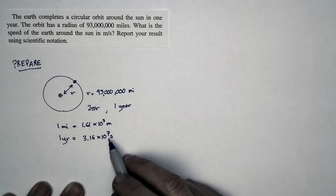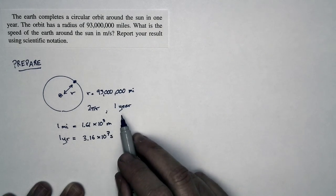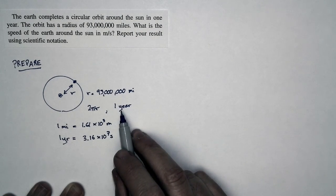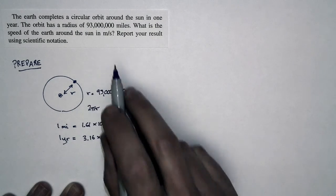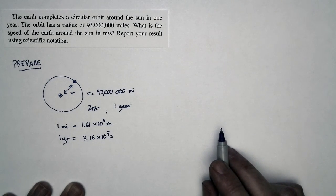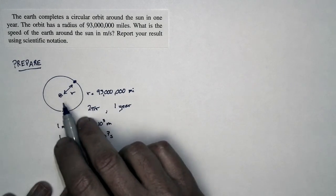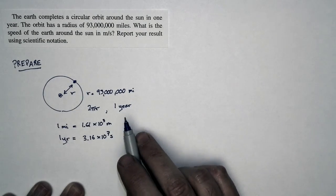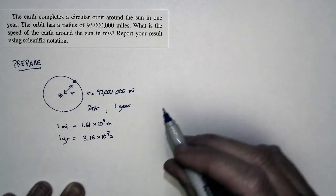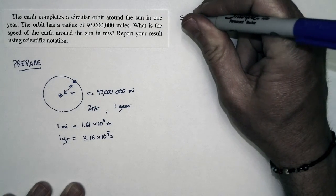So with these conversions in hand, and with this basic data in hand, we are ready to calculate the speed of the Earth around the Sun in units of meters per second. And since it's a big distance, we're expecting this to be a pretty high speed. Let's find out.